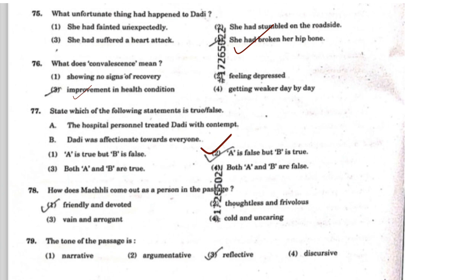Question 78: 'How does Machli come out as a person in the passage?' After reading the whole passage, what is Machli's nature? The correct answer is the first option: friendly and devoted. Machli was quite friendly and devoted — like Dadi, she kept everyone's wellbeing in mind.